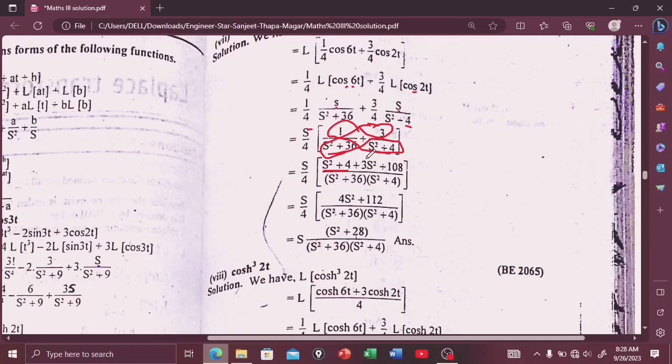So s² plus 4 plus 3s² is 4s², and 3 times 36 is 108, so 108 plus 4 is 112. So it is 4s² plus 112 divided by (s² plus 36)(s² plus 4). Taking 4 common, 112 divided by 4 is 28.